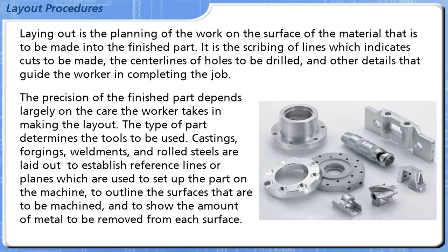Castings, forgings, weldments, and rolled steels are laid out to establish reference lines or planes which are used to set up the part on the machine, to outline the surfaces that are to be machined, and to show the amount of metal to be removed from each surface.